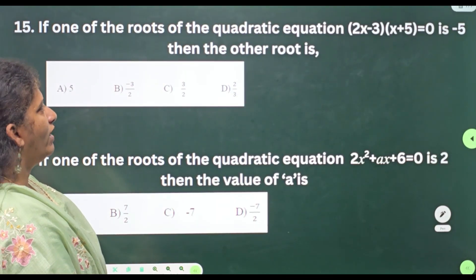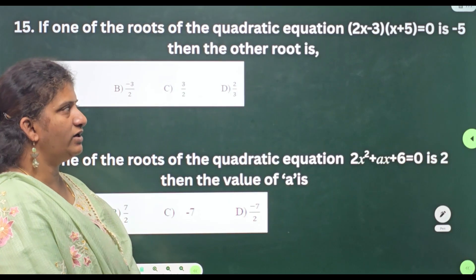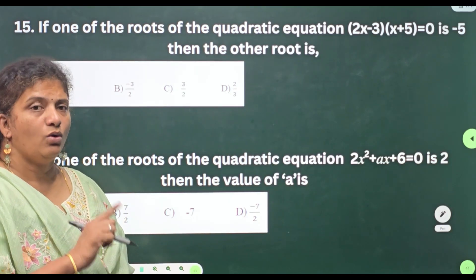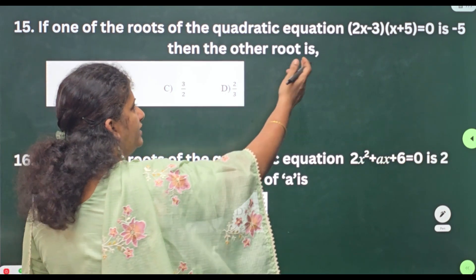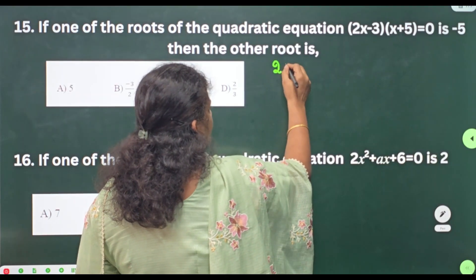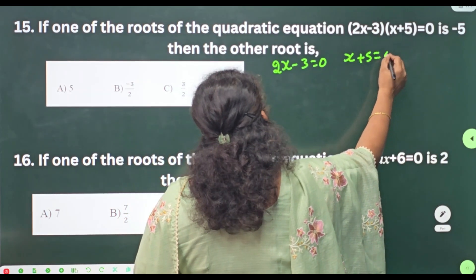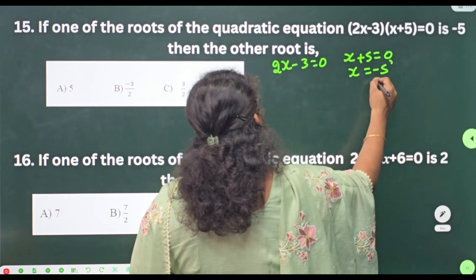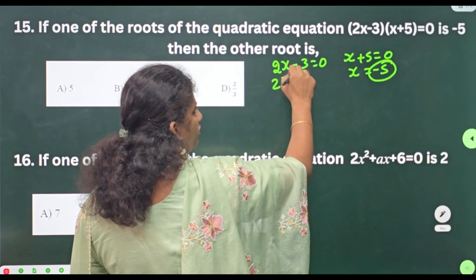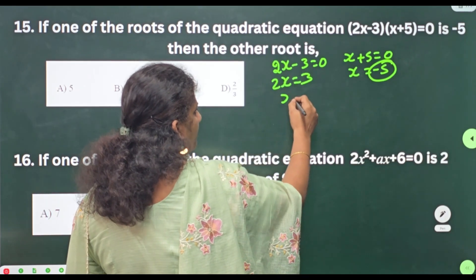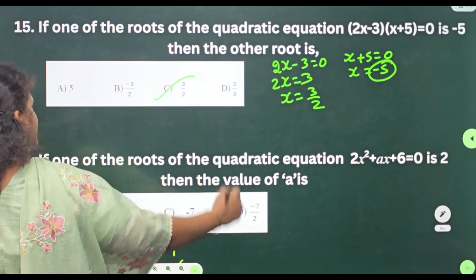Fifteenth one: if one of the roots of the quadratic equation (2x − 3)(x + 5) = 0 is −5 — one root is given. Then the other root is — here directly you can equate to 0: 2x − 3 = 0 or x + 5 = 0. From x + 5 = 0, x = −5, already given. For the other root: 2x = 3, x = 3/2. The other root is 3/2. Option C is your answer.